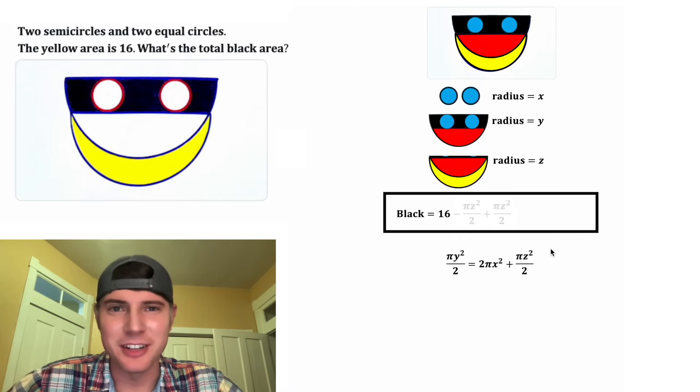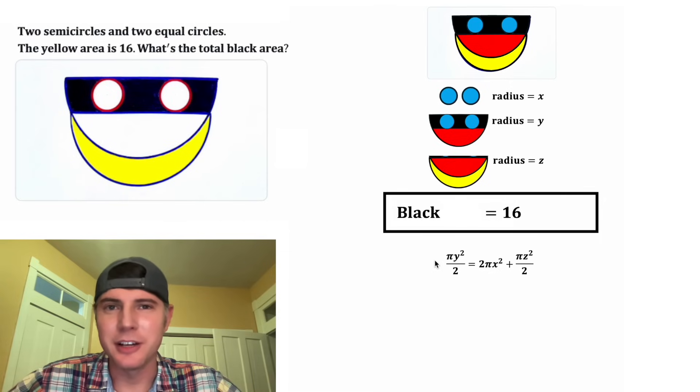These can also cancel each other out. And now 16 is all that's left. So we have the answer to our question. This black area is equal to 16 square units.